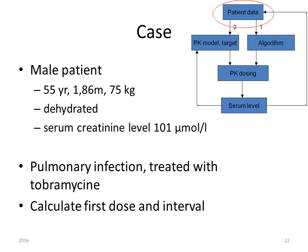Let's present the case of a patient treated with tobramycin. This patient is a male, 55 years old, 1.86 meters tall, 75 kilograms. He is dehydrated and has a creatinine concentration of 101 micromoles per liter. He has a pulmonary infection that needs treatment with tobramycin. You have to calculate the first dose and dosing interval.